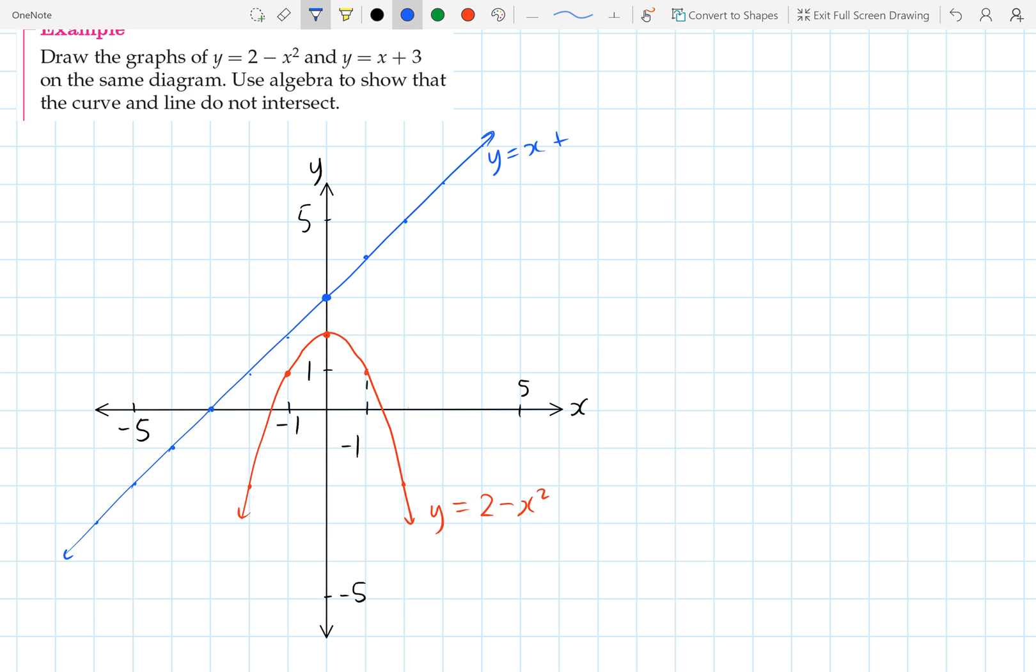So what we'll do is we'll sort of start off assuming that they do intersect. So because we've got y equals here and y equals here, we'll make those equal to each other. So we get x plus 3 equals 2 minus x squared. And we'll rearrange so that we get a quadratic. So that gives us x squared plus x plus 1 equals 0.